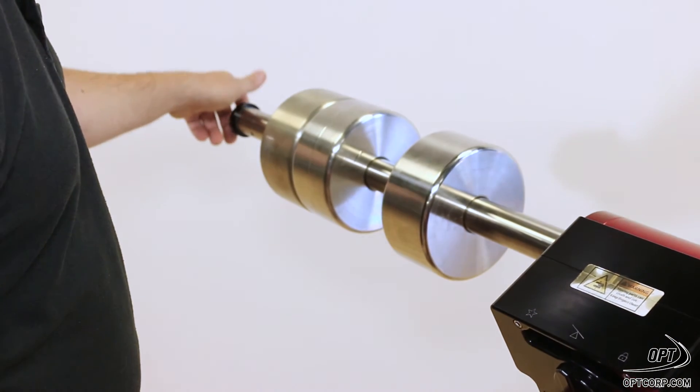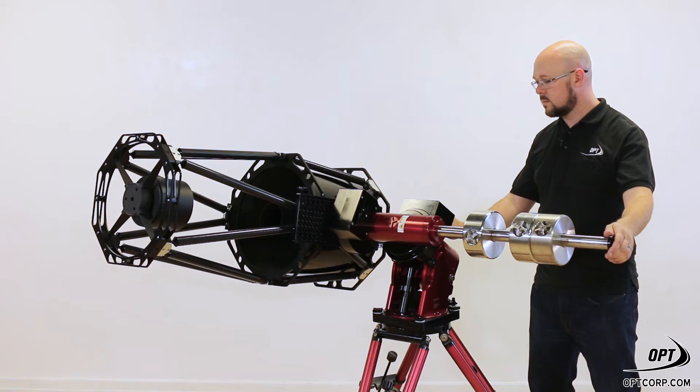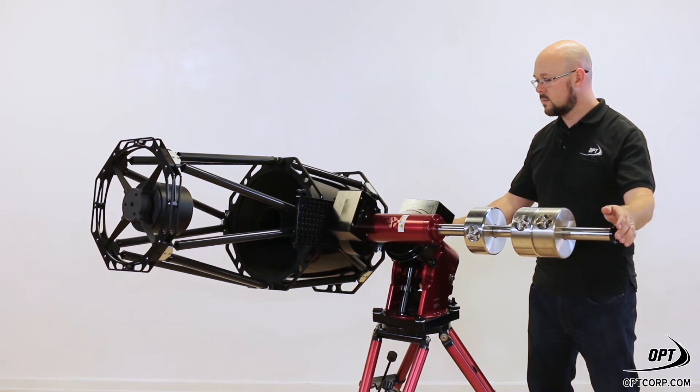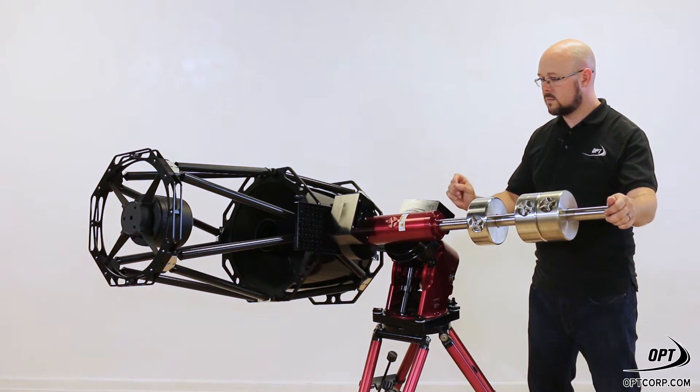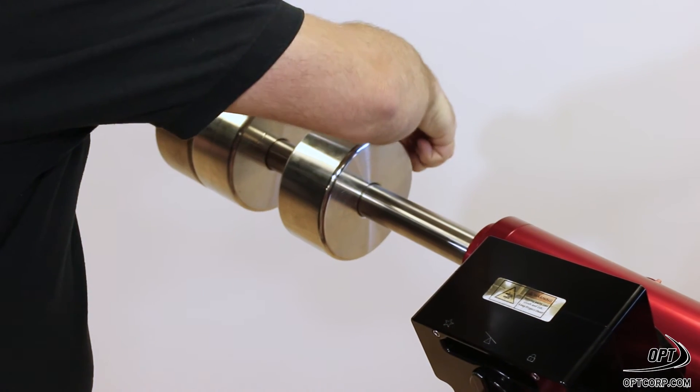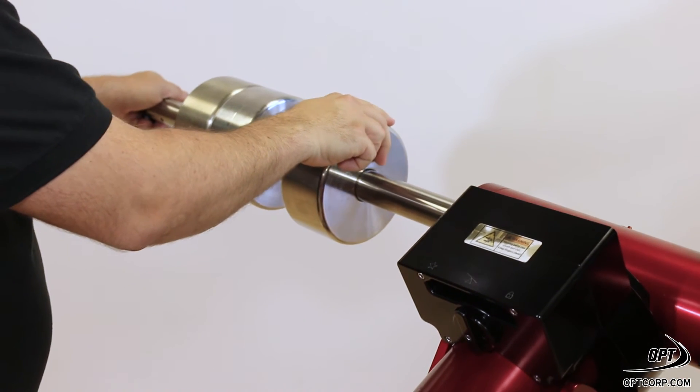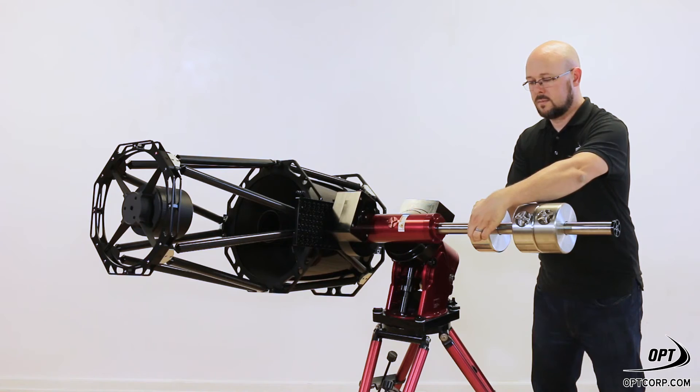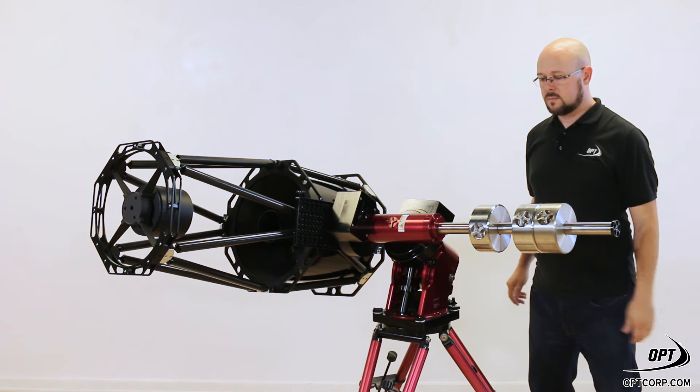If you unlock the right ascension axis lock, whichever side drops, the telescope or the counterweights, is the heavy side. And you need to adjust the counterweights up or down until you can let go with the axis unlocked and neither side drops.